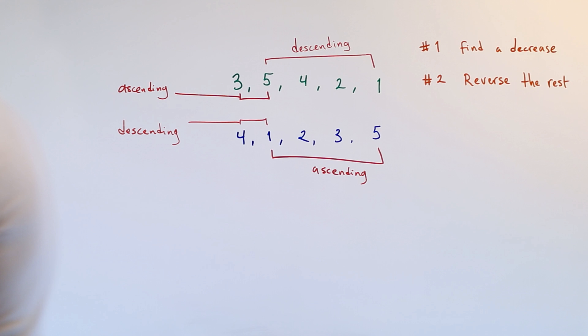One, we need to find the place in the vector where the value goes down, where we go from a higher value to a lower value, and we need to reverse sort the rest of the vector after that point. But we're clearly missing a detail here, because if we just apply what we've talked about, what we would end up with would be three, one, two, four, five. And that's obviously not what we have in the second case. We have four, one, two, three, five.